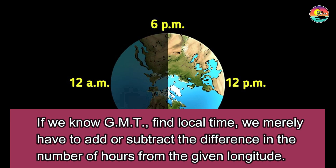If you know GMT, to find local time, we merely have to add or subtract the difference in number of hours from the given longitude.